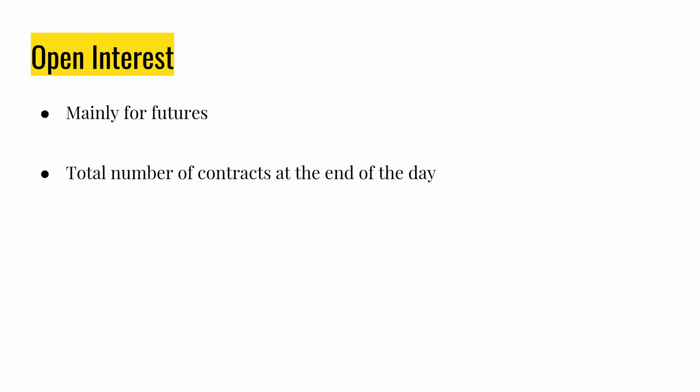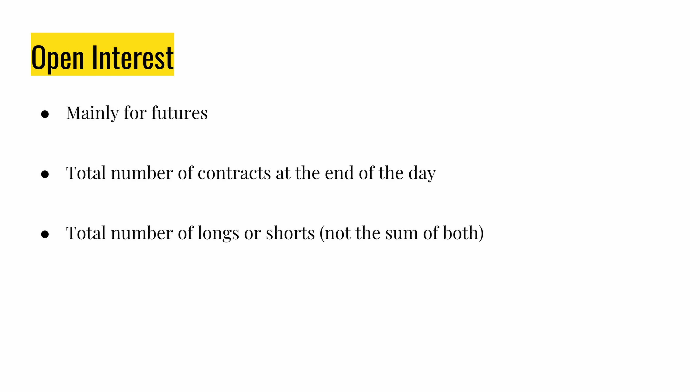Let's first get open interest out of the way so that I can focus on volume for the rest of the video. Open interest is mainly for futures and tells us the total number of contracts at the end of the day. It counts the number of longs or shorts — not the sum of both, but just one side — because for every long there must be a short, so counting both would be counting the same thing twice.